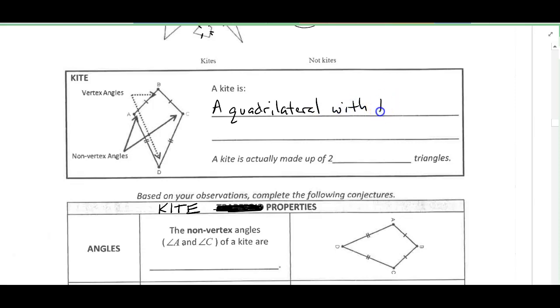with two pair of consecutive sides congruent. So we see in the picture here, I've got this pair of congruent sides, and I've got this pair of congruent sides. And then we've got some other vocabulary here. We've got vertex angles. So up at the top and down at the bottom. It doesn't necessarily have to be the top and the bottom.